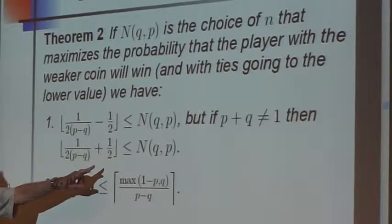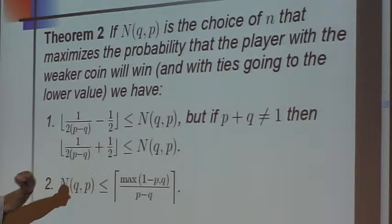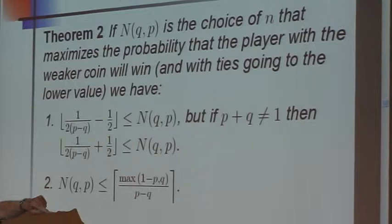A slightly sharper inequality if p plus q is not equal to 1, very slightly sharper, the minus half turned into a plus half. And an upper bound is this, and so both of them go to infinity as q approaches p in the fashion of a constant over p minus q.